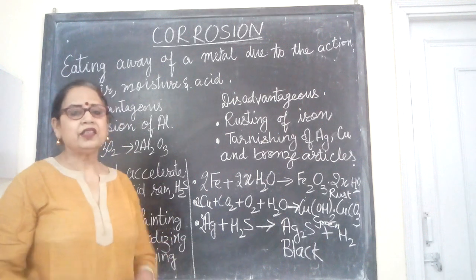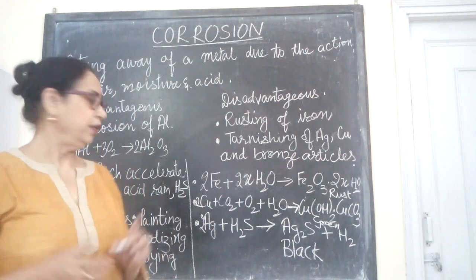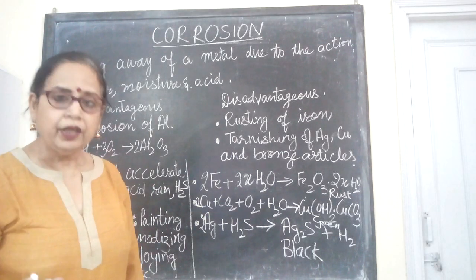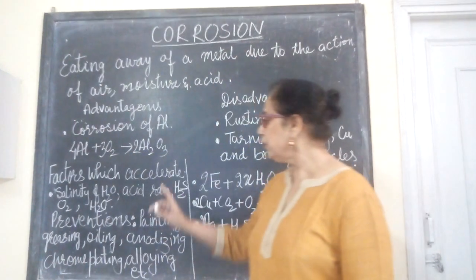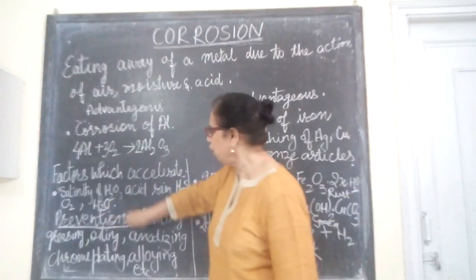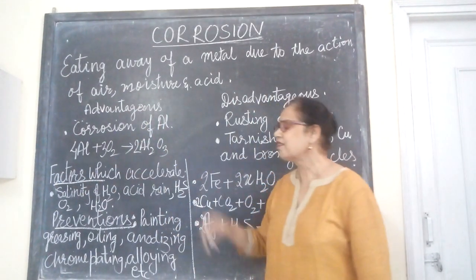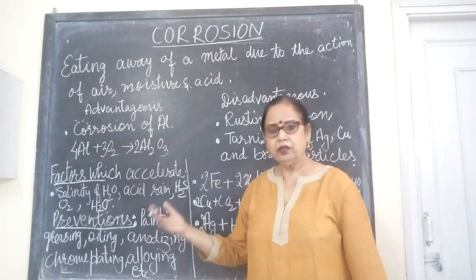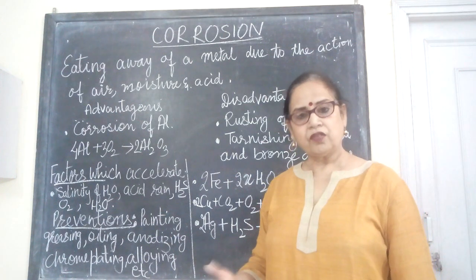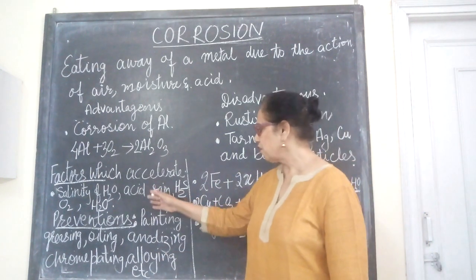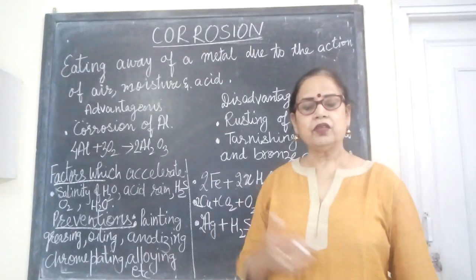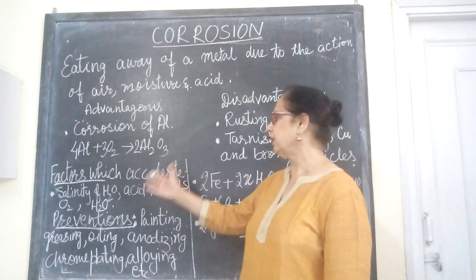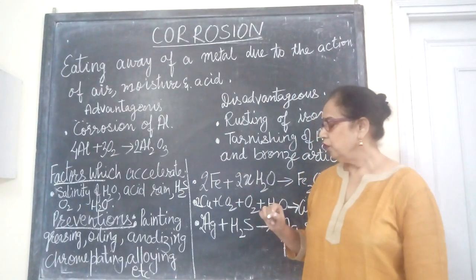Corrosion is disadvantageous because jewellery loses its sheen and metals deteriorate. So how can we prevent it? Before we come to prevention, we should know the factors which accelerate corrosion. These factors include water, salinity of water — saline water causes corrosion at a much faster rate — acid rain, and gases like hydrogen sulfide and CO2 present in the atmosphere.